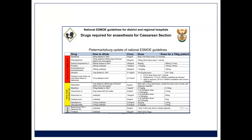You're allowed to cheat. Get the ESMOE guidelines, stick them up on the wall in your theater, and laminate them — they tell you exactly how to draw up everything. You can see which drugs to draw up in every case, which to have ready but not drawn up, your dosage for spinal, and how to mix it if you need to.